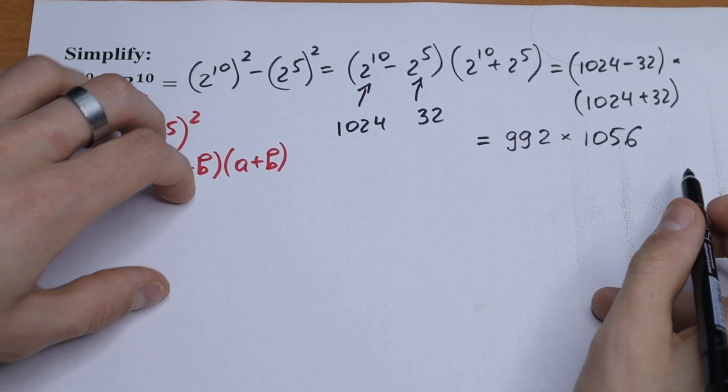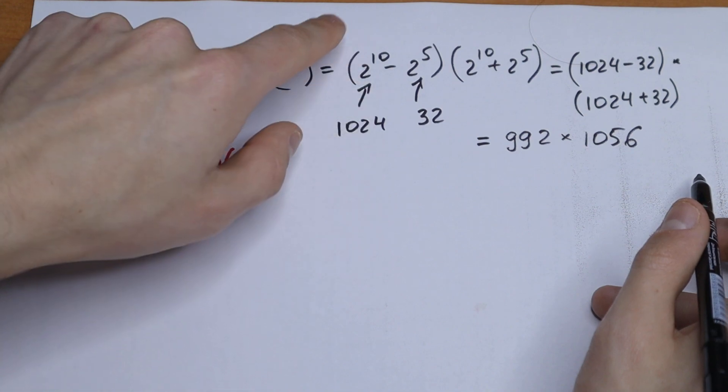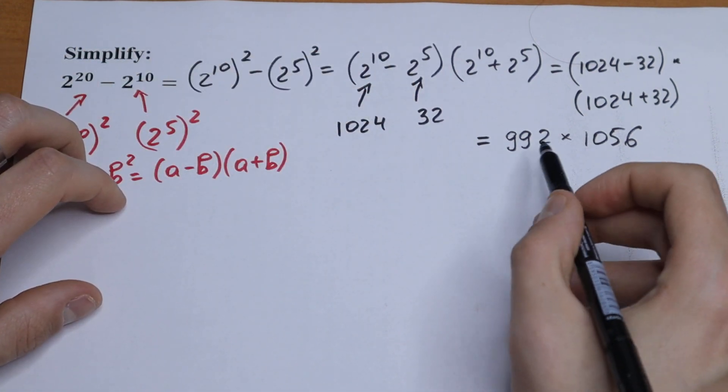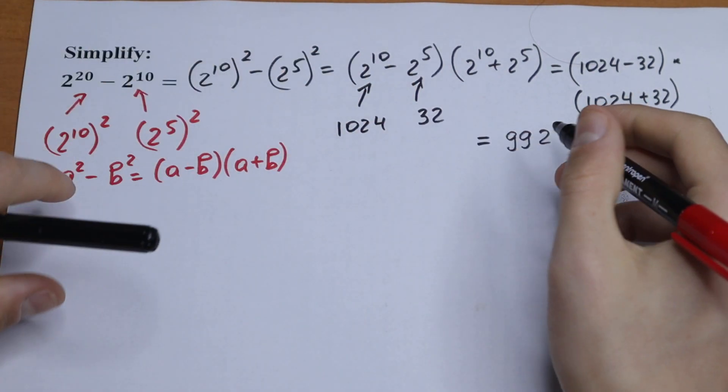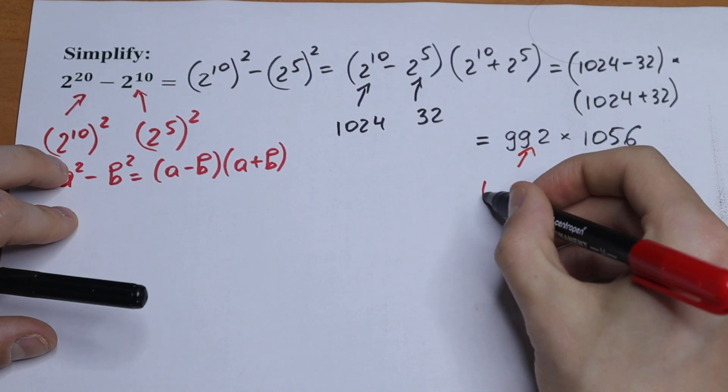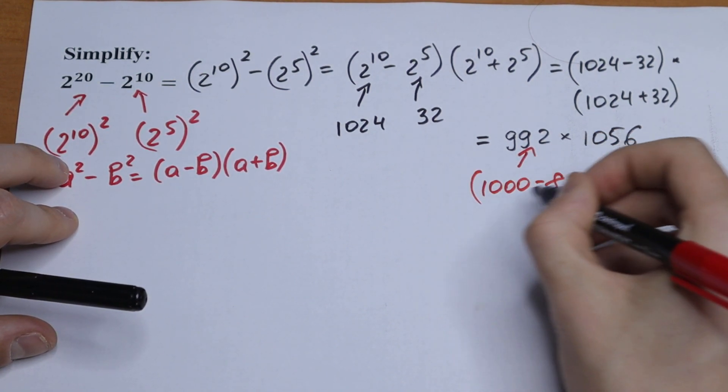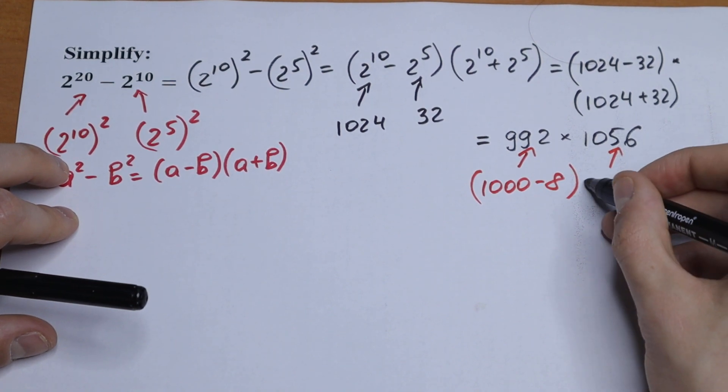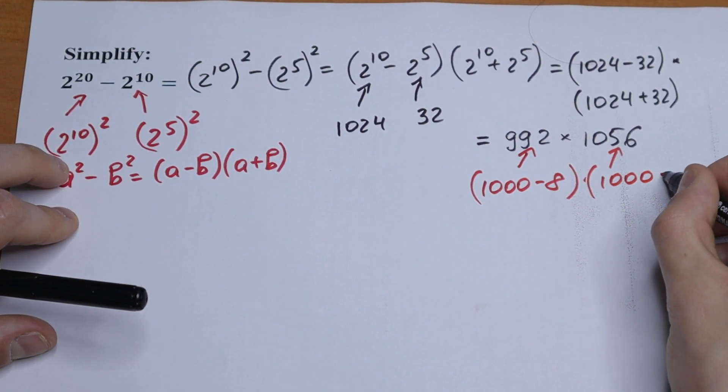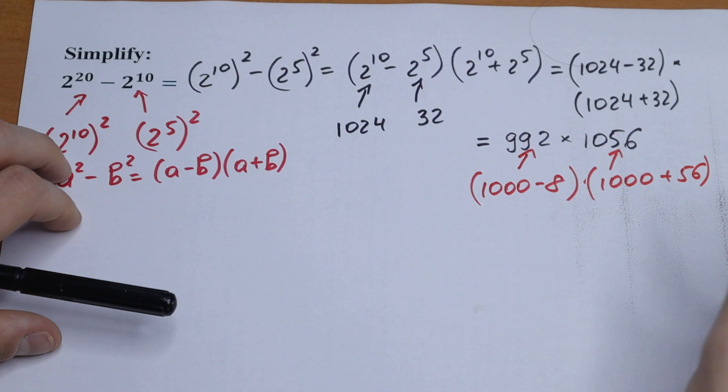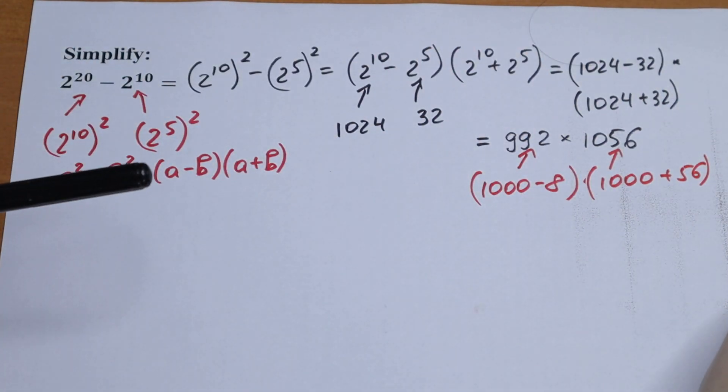So we need to find this product. How can we find this product? Using this method: we need to write 992 as (1000 minus 8), and multiplying by the other parentheses, (1000 plus 56). So we need to multiply these two parentheses.